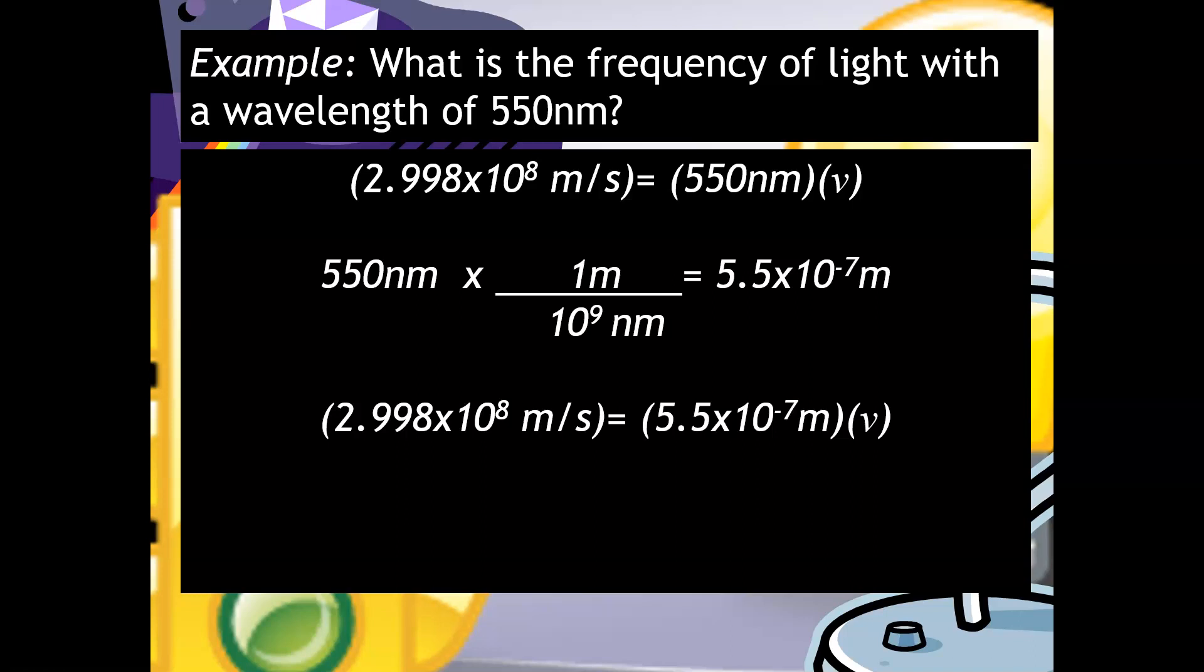Now I can actually safely plug in back into my equation. And when I do that, I have to divide the 5.5 times 10 to the minus 7 meters over to the other side. And you should get 5.5 times 10 to the 14th. And then I have per second, you could do one over seconds, you could do per second, like I've written there, you could even do Hertz. Either one is acceptable.